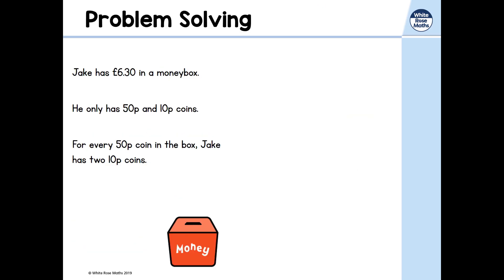Let's have a look at a new problem. Jake has £6.30 in a money box. He only has 50p and 10p coins. For every 50p coin in the box, Jake has two 10p coins. The question is: how many of each coin does Jake have in his money box?